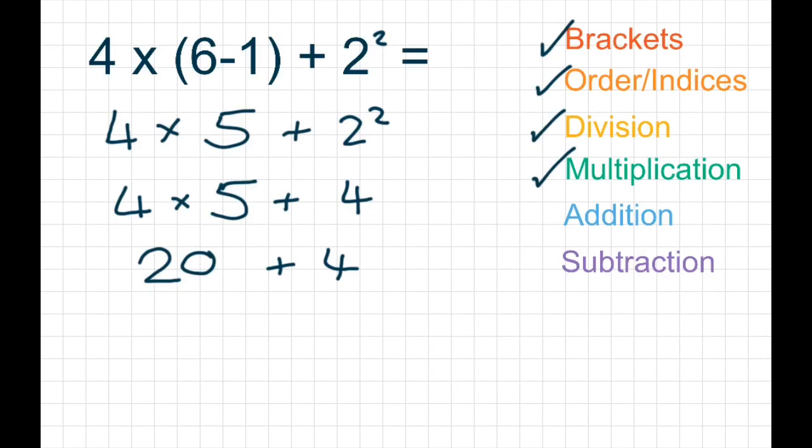Addition is the last symbol we have. So we need to finish by adding these two numbers together. 20 and 4 equals 24. And that's us done.